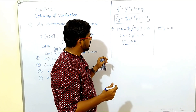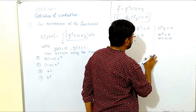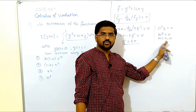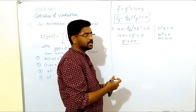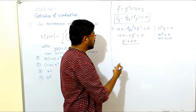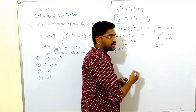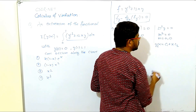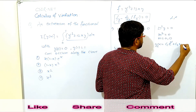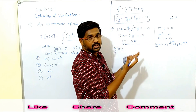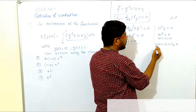For the complementary function, the auxiliary equation is m² = 0, so m = 0, 0. The roots are real and equal. For real and equal roots alpha, the solution is c1·e^(αx) + c2·x·e^(αx). Since alpha is 0 here, e^0 = 1, so the complementary function is c1 + c2·x.